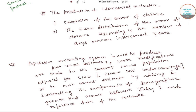So these intercensal and postcensal estimates are two types of population estimates, where intercensal estimates are estimates of population between two census dates, whereas postcensal estimates are estimated on the basis of the prior census, usually the most recent one.